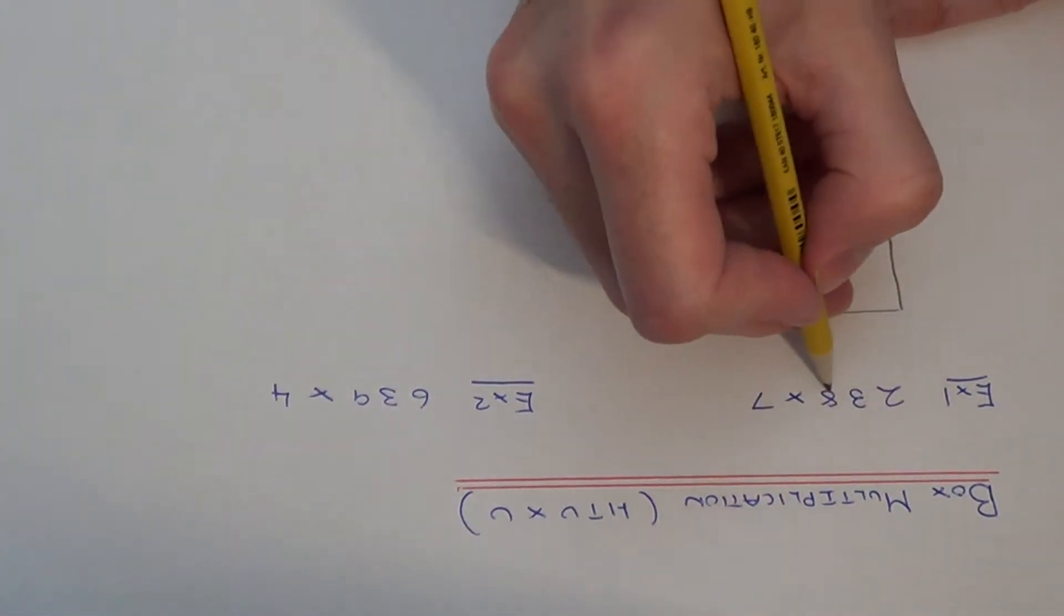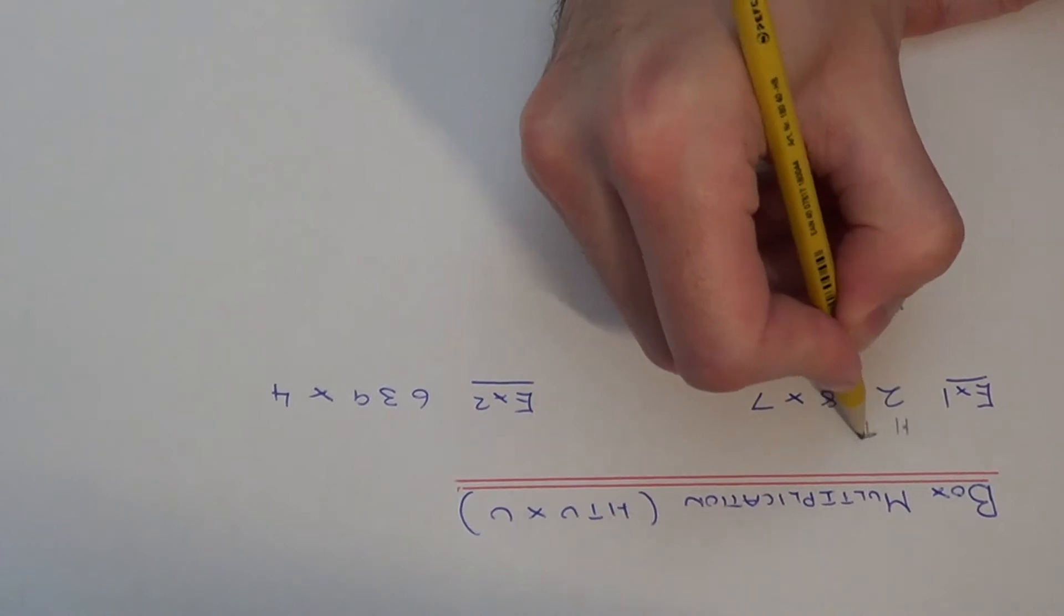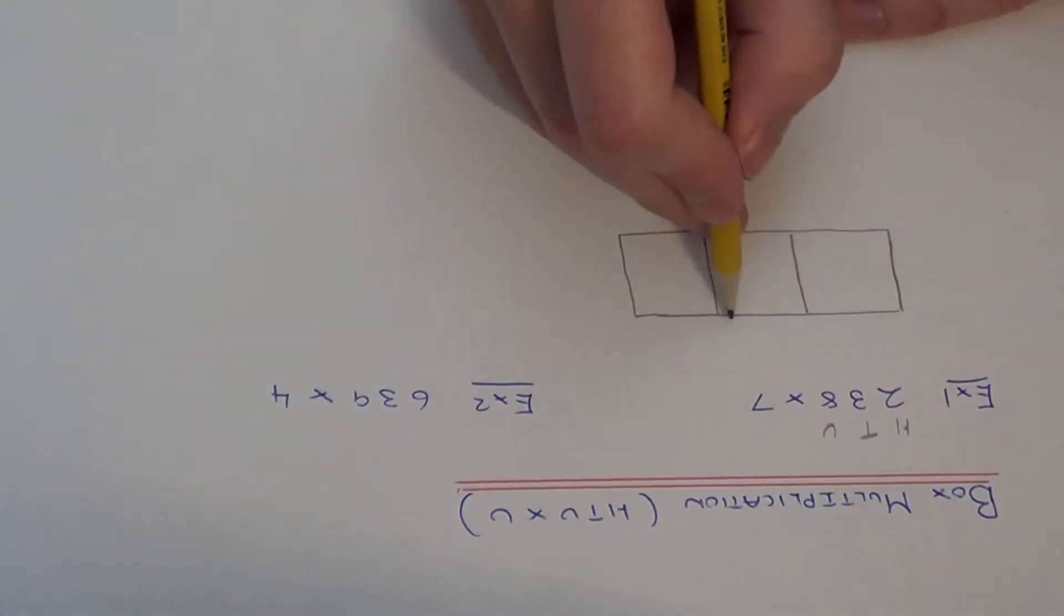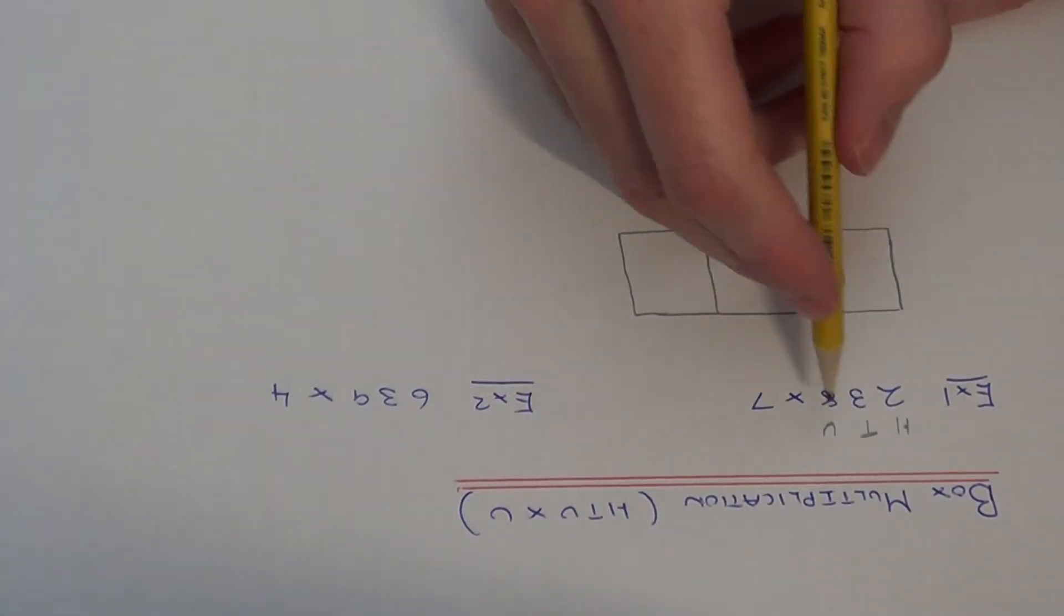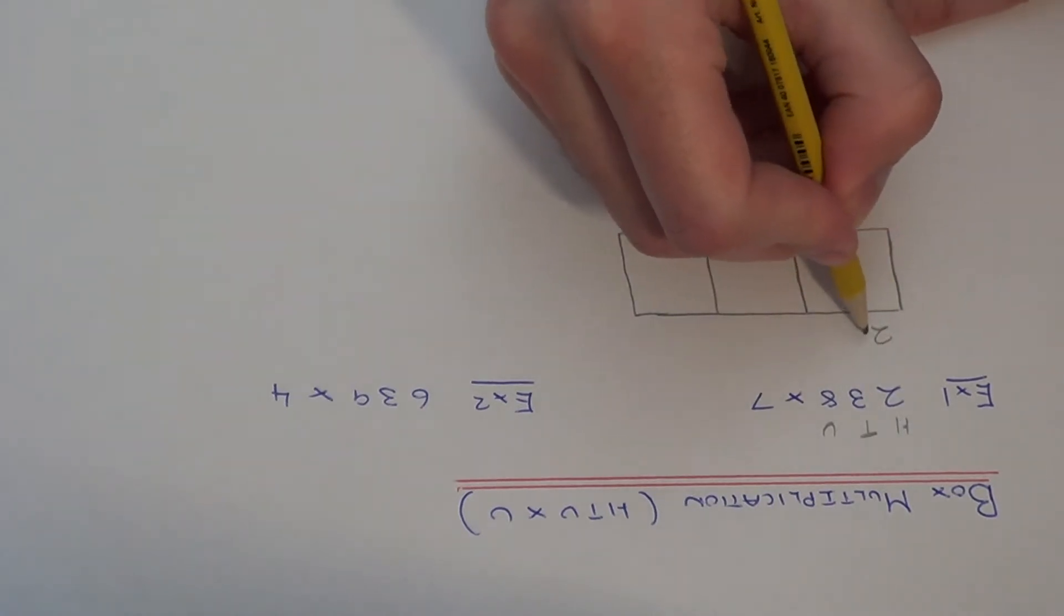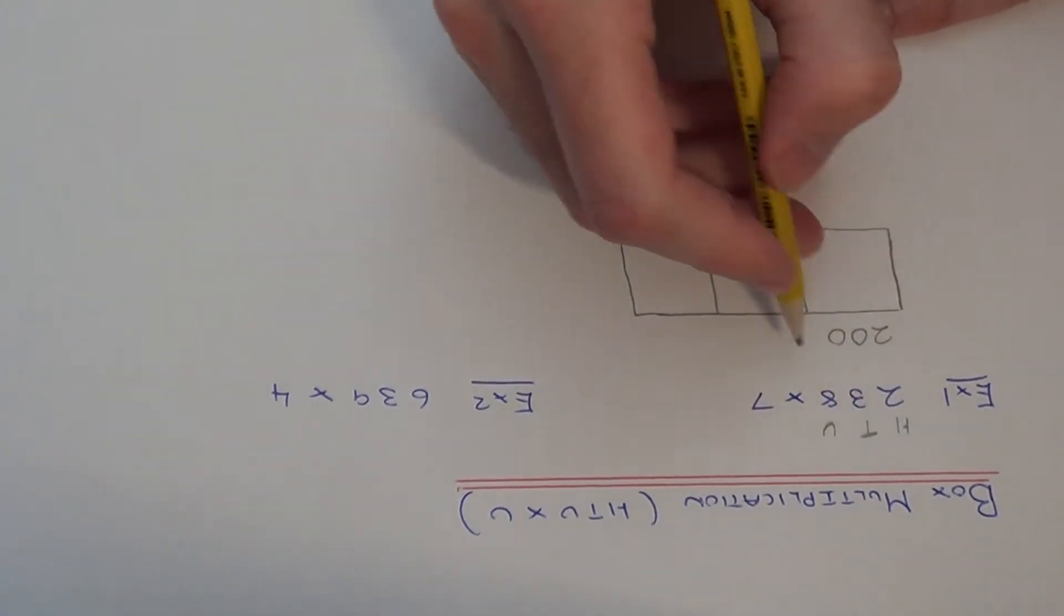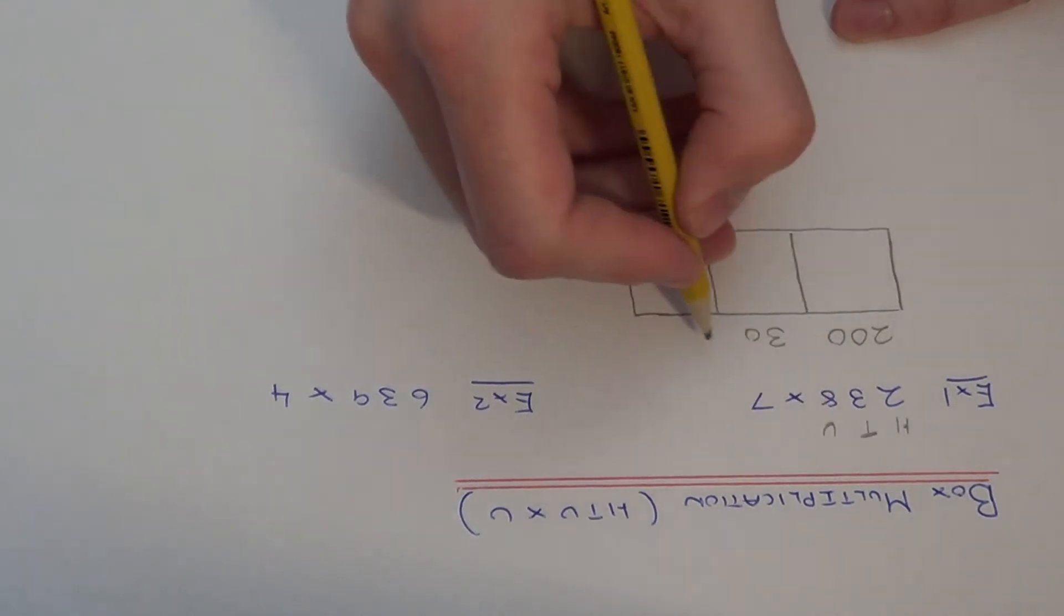We need to break up 238 into hundreds, tens and units and write this above the top of each box. So we've got 200, 3 tens which is 30, and 8 units.